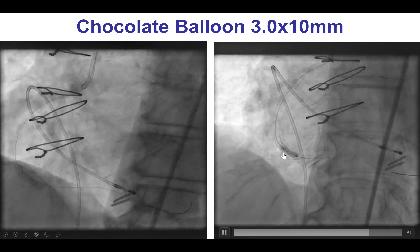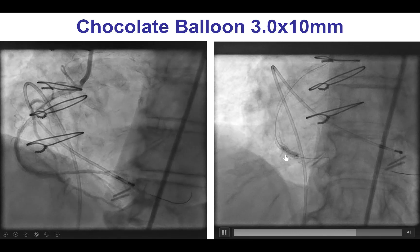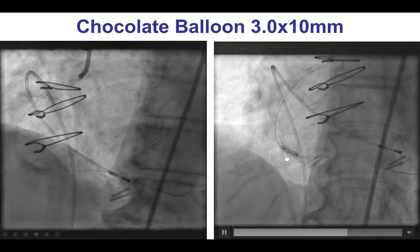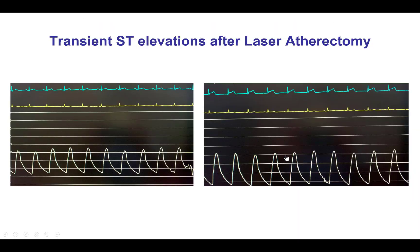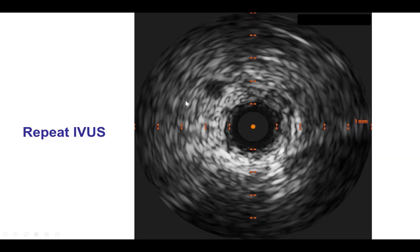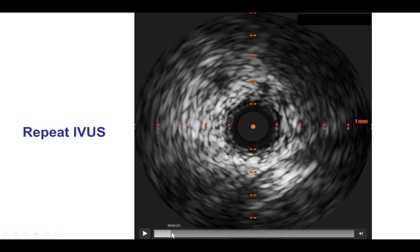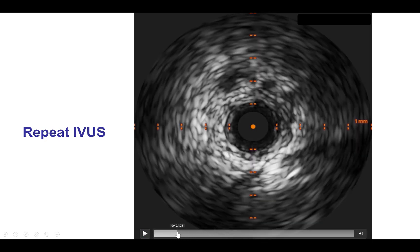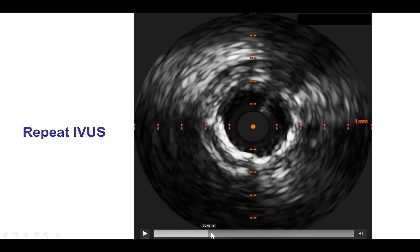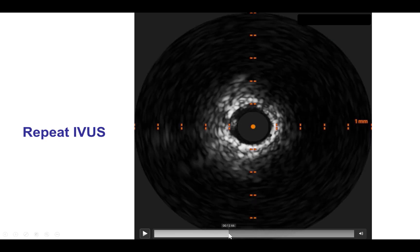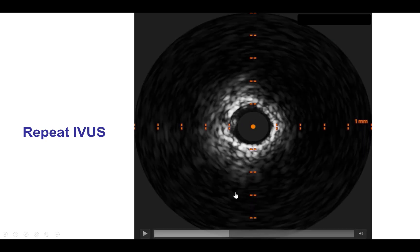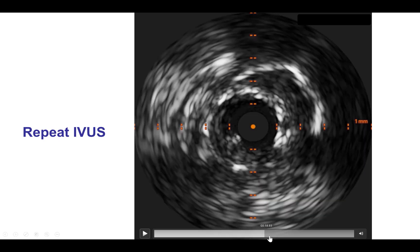We used another plaque modification balloon — a chocolate balloon. Once again, there is a waist in the balloon. The patient also did not tolerate the laser well; there was transient ST segment elevation when the laser was activated. Intravascular ultrasound was once again very useful, showing the bifurcation distally and the area of under expansion, which remained essentially unchanged.